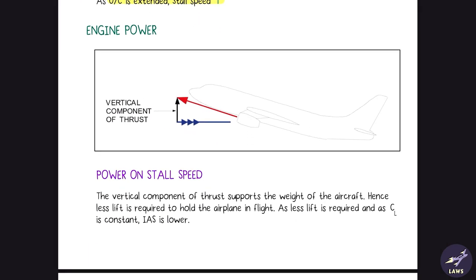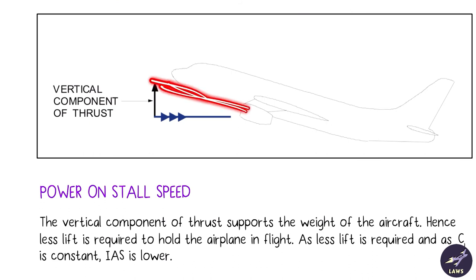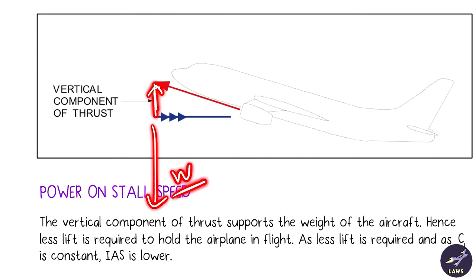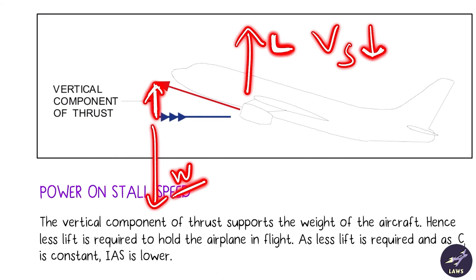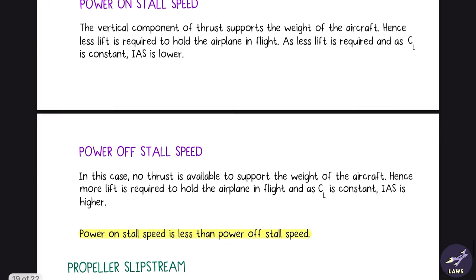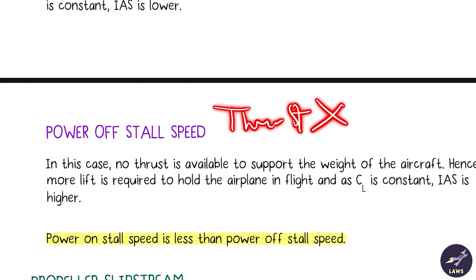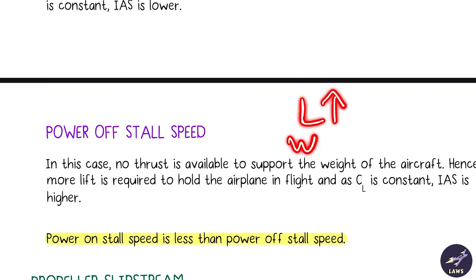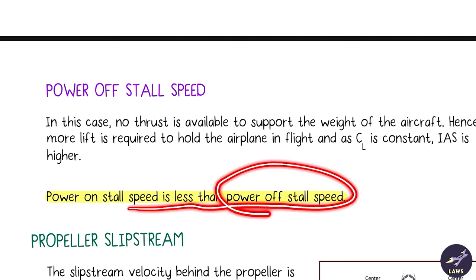Effect of engine power on stall speed: the vertical component of thrust can balance weight to a certain extent during power-on operation. Because thrust partially balances weight, comparatively less lift is required, so power-on stall speed is lower. In power-off conditions, no thrust is available so lift must increase to balance weight, increasing stall speed. Power-on stall speed is less than power-off stall speed — this is important to remember.